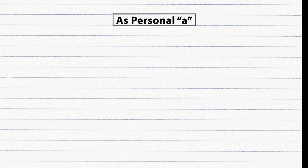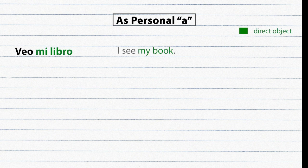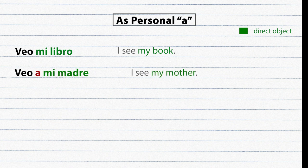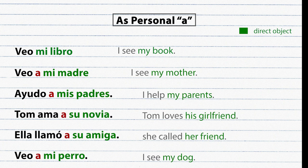The personal A: in Spanish, if the direct object of a sentence is a human being or a pet the speaker has personal feelings for, we put the letter A between the verb and the direct object. For example: 'Veo mi libro' — book is not a person so no personal A. 'Veo a mi madre' — mother is a human being so we use the personal A. More examples: Ayudo a mis padres. Tom ama a su novia. Ella llamó a su amiga. Veo a mi perro.